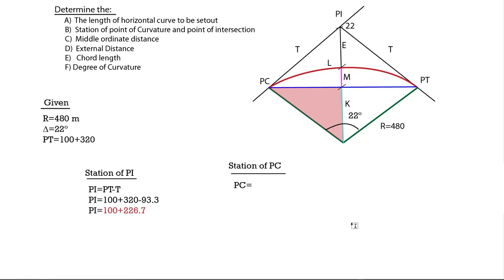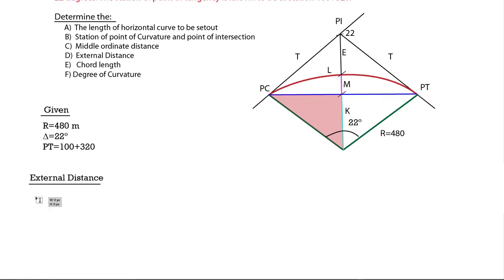PC is equal to the station of PT. The external distance is the distance between PI and the middle of the curve.